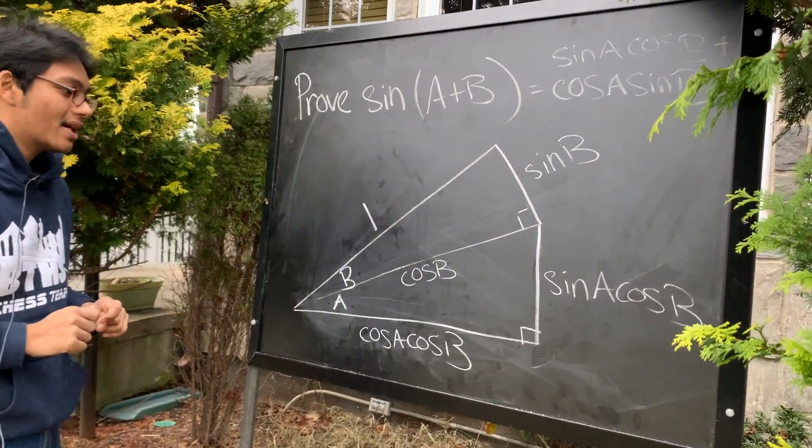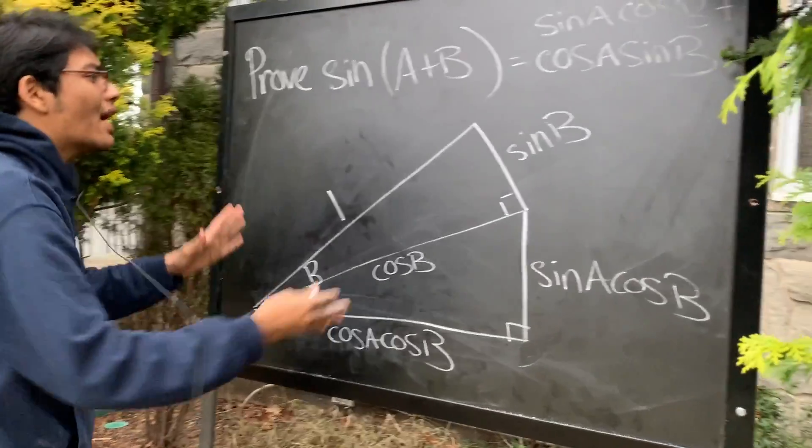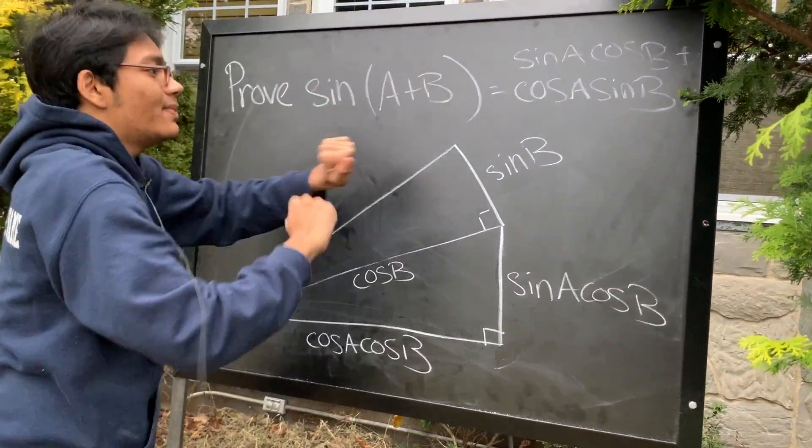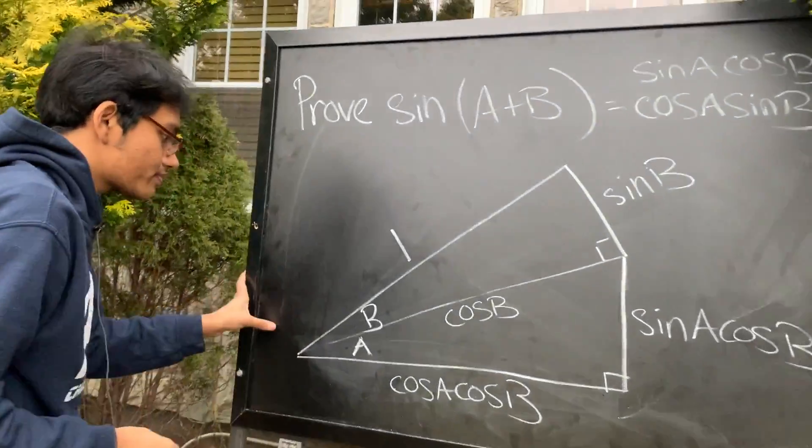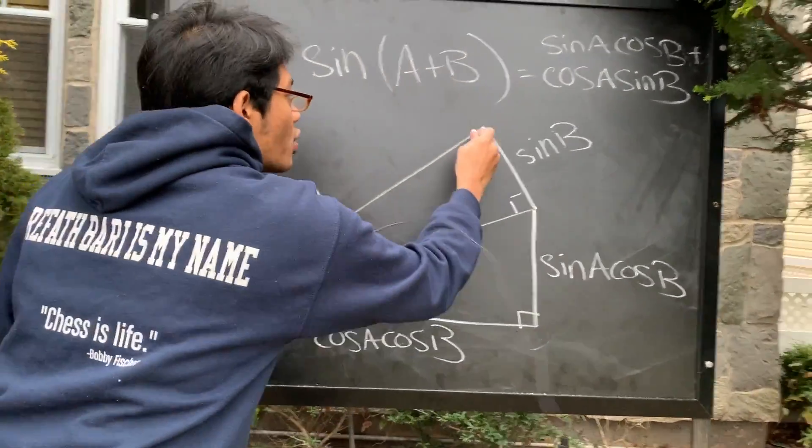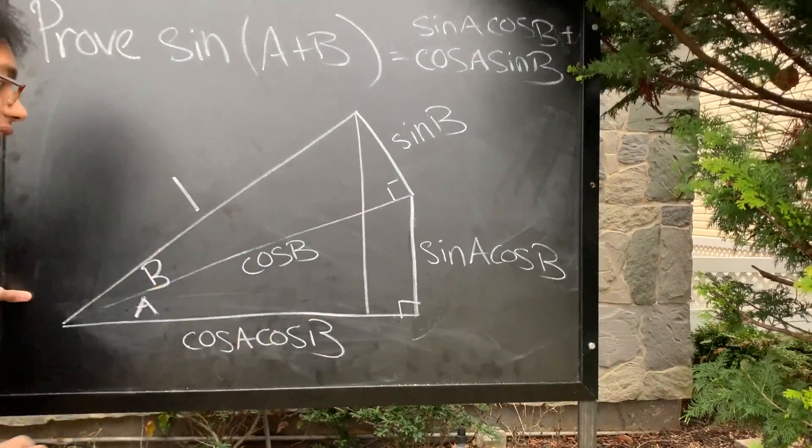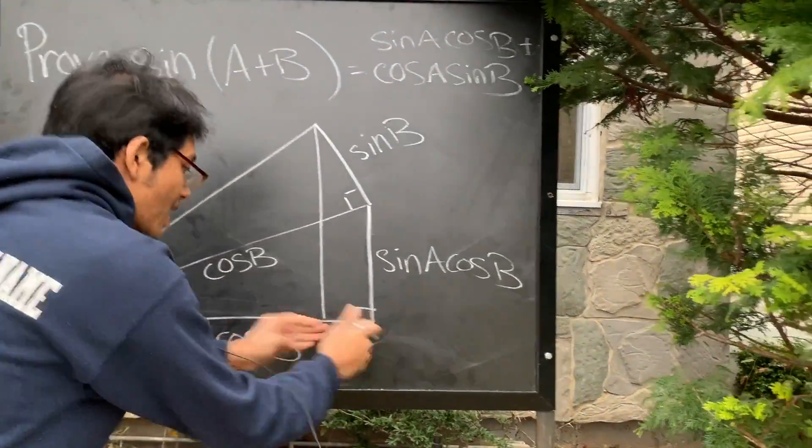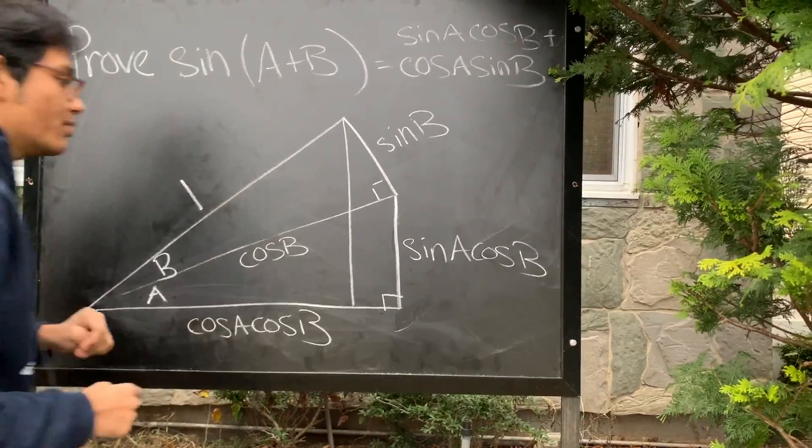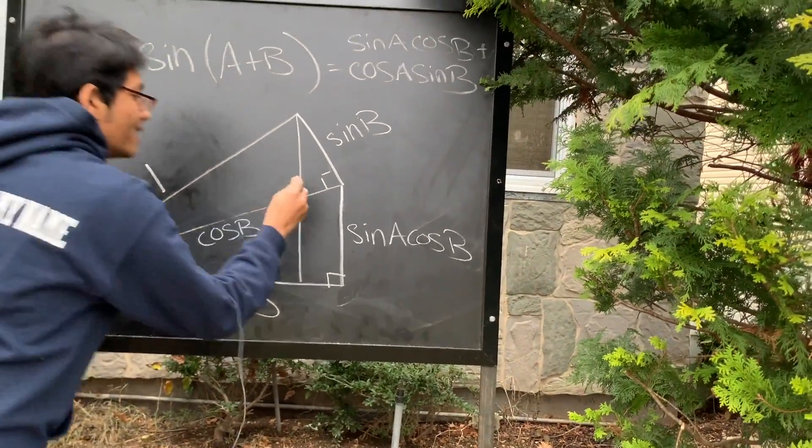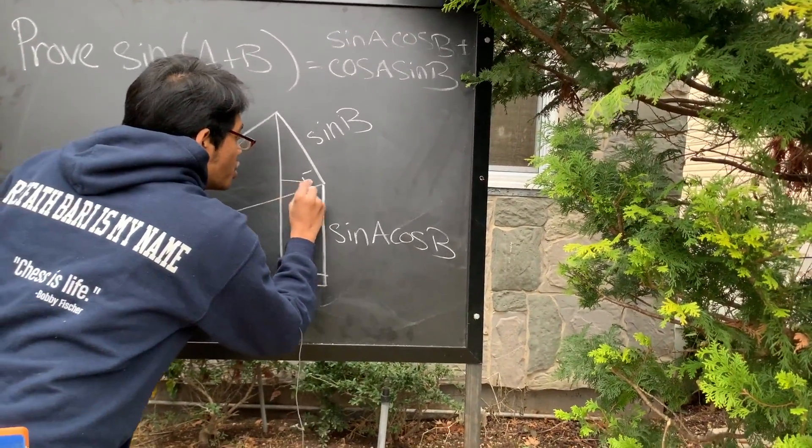Okay, so now we have some lengths going, but how do we prove that sine of A plus B is this monster? Well, here's what I'm going to do. I'm going to draw an auxiliary line. So I'm going to draw this line and I'm going to cut off this part over here. So let's see what we get.